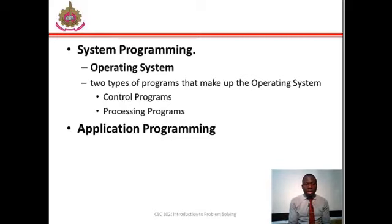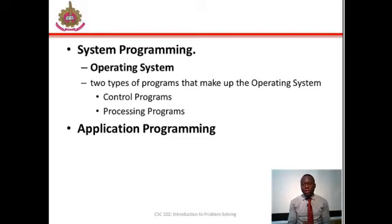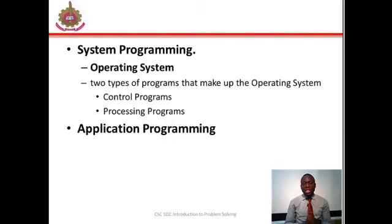The second type is known as the processing programs. The OS processing programs are those that facilitate the efficient processing operations by simplifying program preparation and execution for you as a user. The major processing programs existing in the OS are: one, the language translator; two, the linkage editor; three, the library programs; and four, the utility programs.